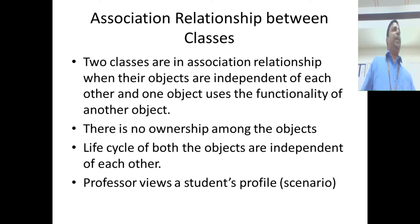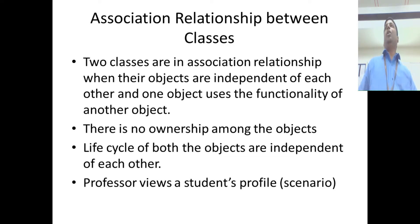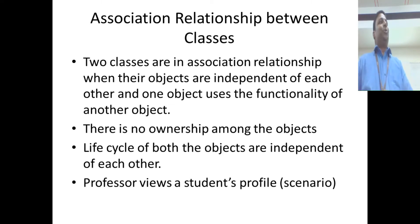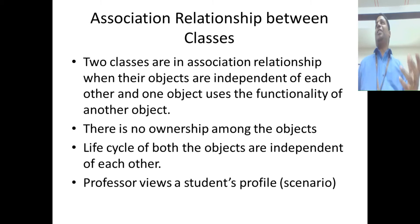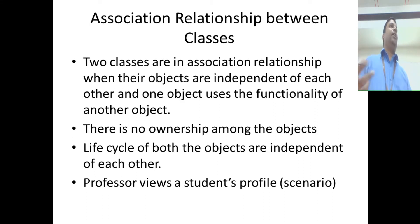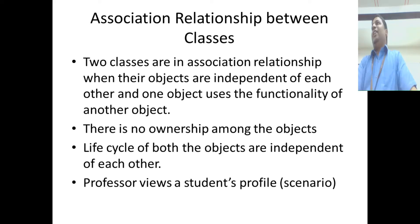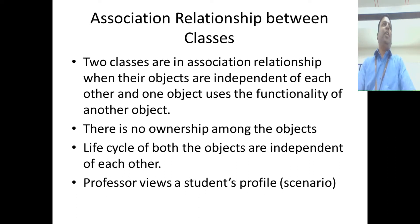When two classes have an association relationship, they are totally independent of each other — their lifecycle or lifetime is independent. If you delete one object, the other object is not impacted. A very good example is teacher and student. If a professor leaves the organization and you delete the professor object, you are not going to delete the student object, and vice versa.